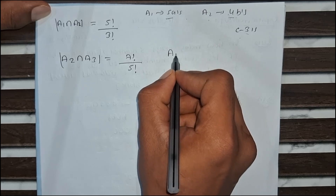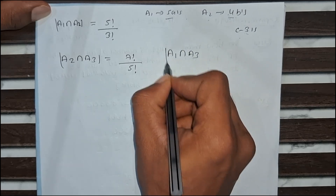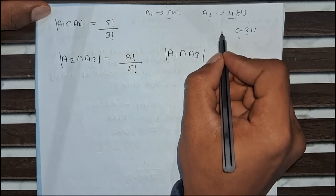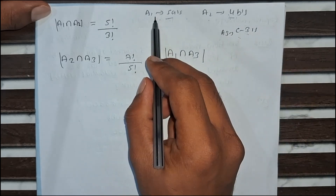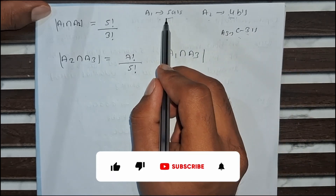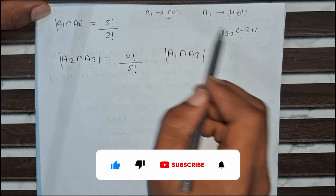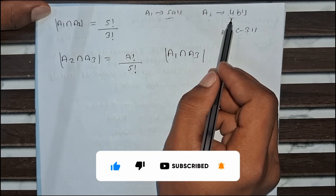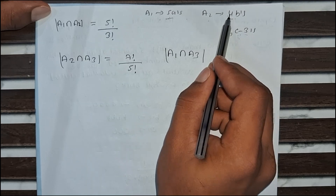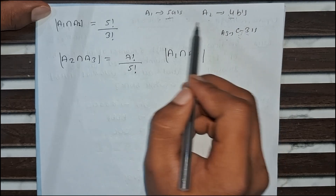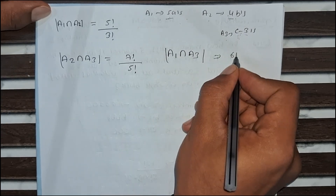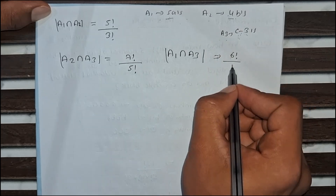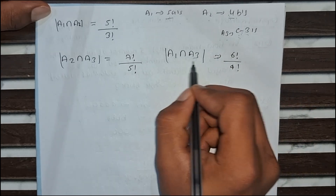For A1 intersection A3: we consider the 5 A's as 1 block and the 3 C's as 1 block, with 4 B's remaining. So 2 blocks plus 4 gives 6 elements. A1 intersection A3 equals 6 factorial divided by 4 factorial.